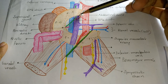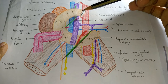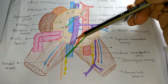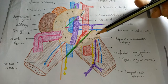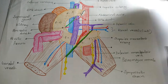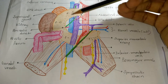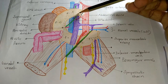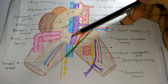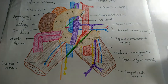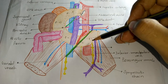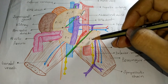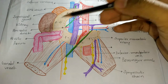The duodenum has four parts: the first part, second part, third part, and fourth part of the duodenum. The first part is at least 5 centimeters, the second part is 8 to 10 centimeters, the third part is 10 centimeters, and the fourth part is 2.5 centimeters. Length is very important.